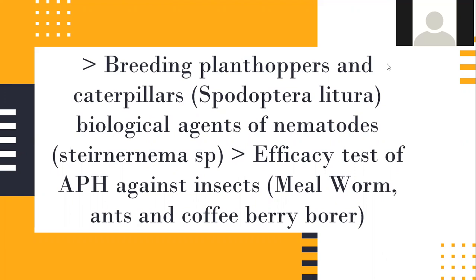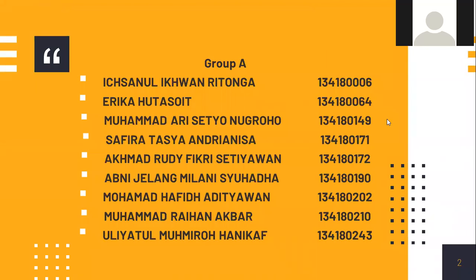Hello everyone, good afternoon. We are from Group A and we want to tell you about the breeding of plant hoppers and caterpillars, specifically Spodoptera litura, biological agents of nematodes - Steinernema sp. - and the efficiency test of entomopathogenic fungus against insects, mealworm, and coffee berry borer.